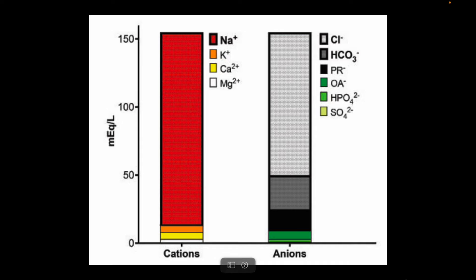This is a Gamblegram, which shows the red representing sodium — always present in a very large amount in the blood — followed by chloride and bicarbonate. Sodium minus chloride and bicarbonate gives us the anion gap. Apart from sodium, the other measured cations are potassium, calcium, and magnesium.